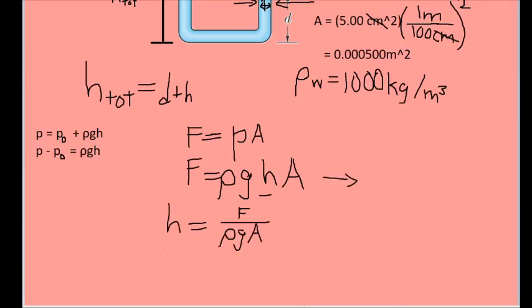And we now have that the height difference of the water in the tubes is equal to the force due to pressure from the fluid divided by the density of the fluid times the acceleration due to gravity times the cross-sectional area of the seal.